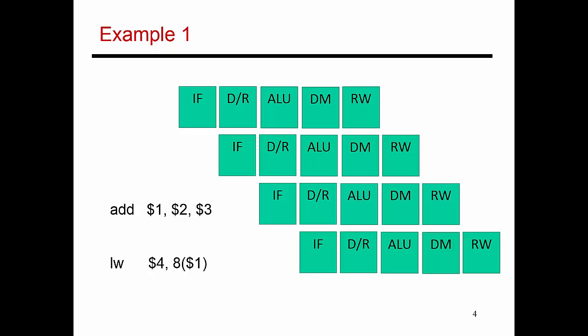In this video, I'm going to go through a few examples and show you the number of stall cycles introduced both without and with bypassing. I'm going to take a pair of instructions and see what delays I need to introduce between them. One instruction produces a result, in this case in register $1, and the second instruction is consuming that value. For any pair of producers and consumers, I'm trying to figure out what gaps I need to introduce.